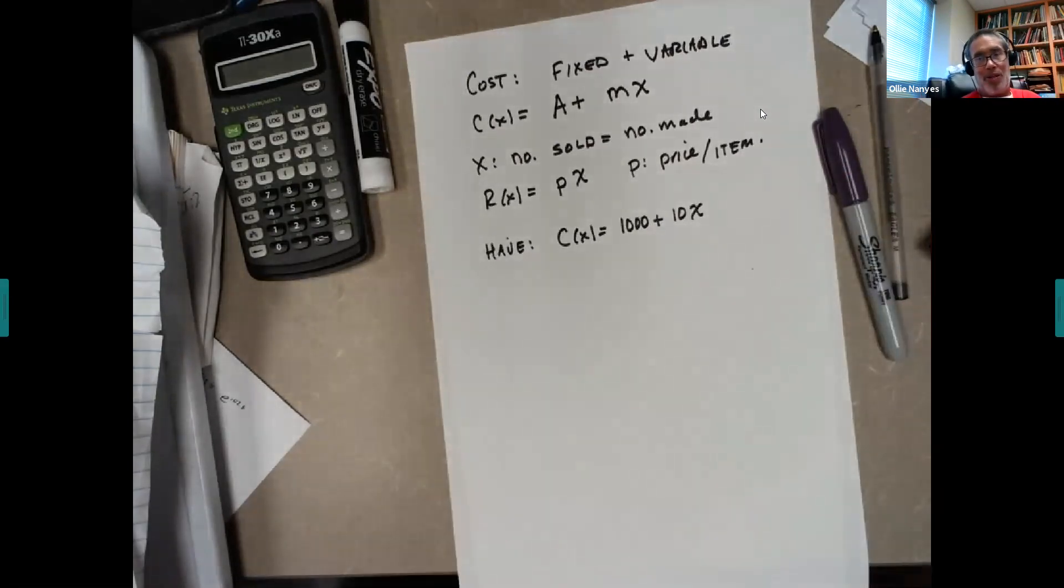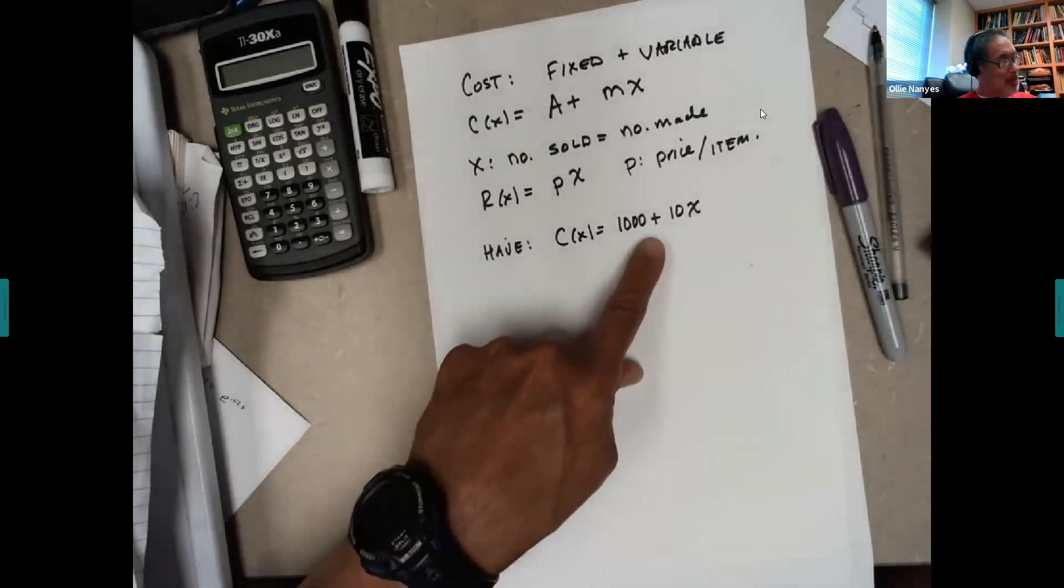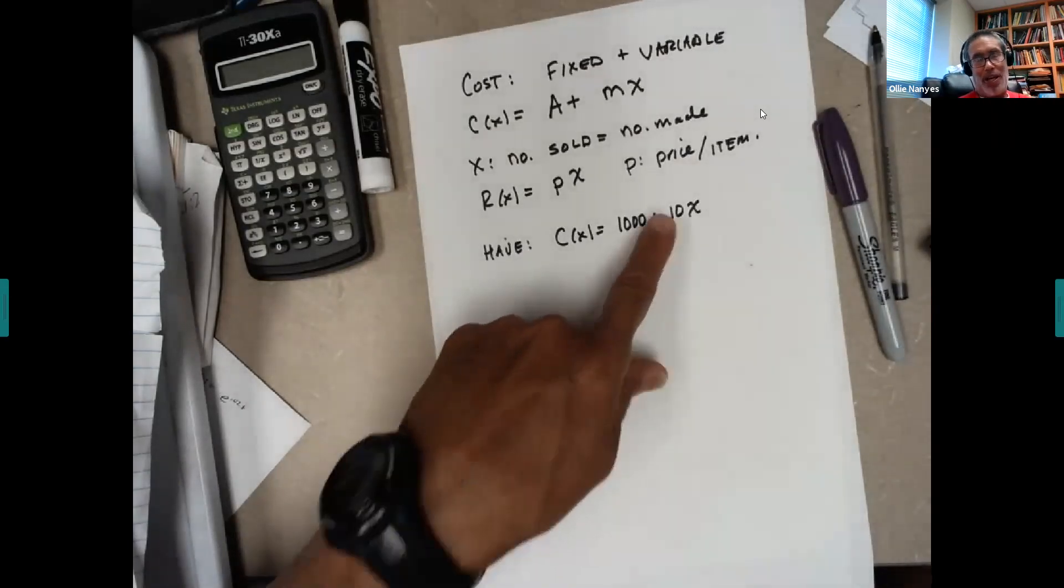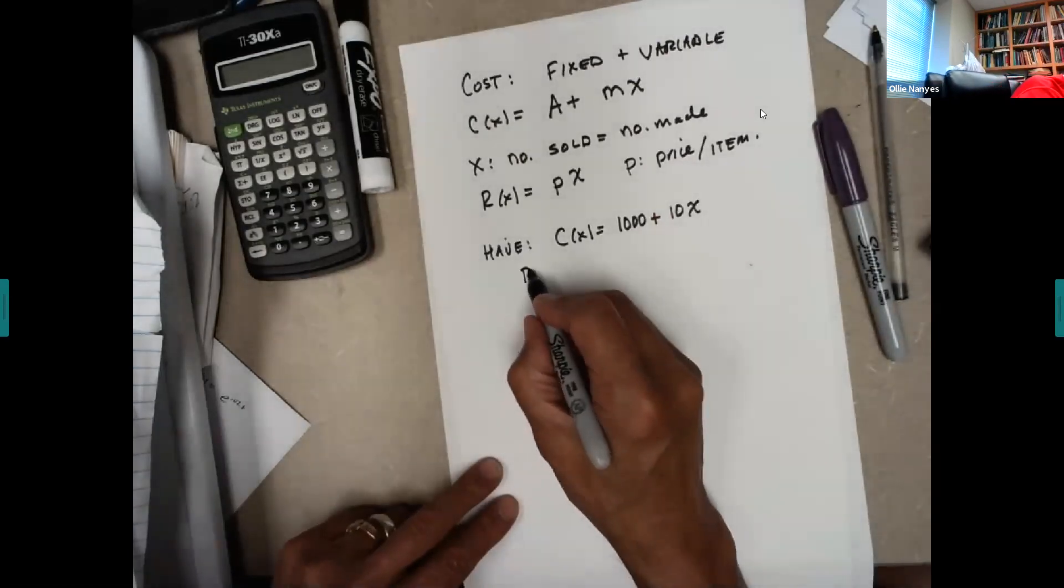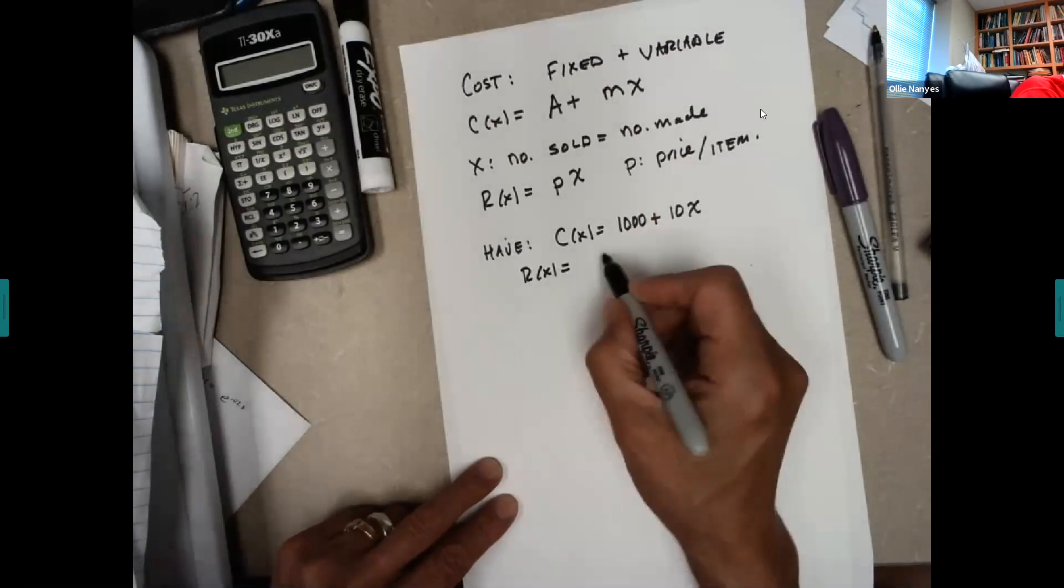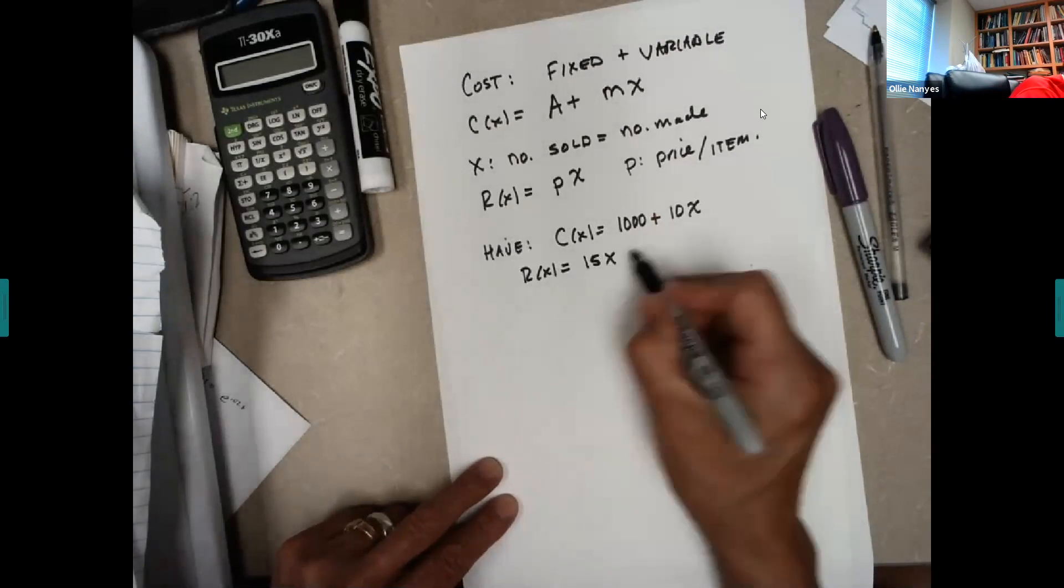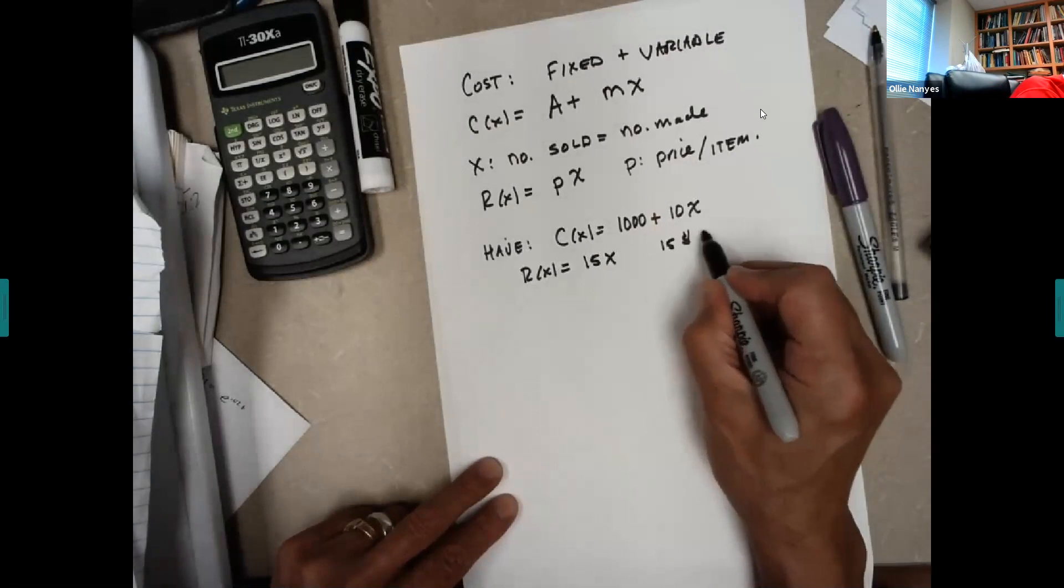Now in general, the startup costs will be much, much higher, much bigger proportion than that. But we're just doing this for argument's sake. Now suppose you found out that you can sell these for $15 an item. So that's $15 per item.